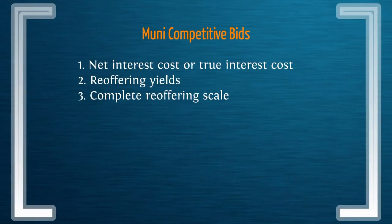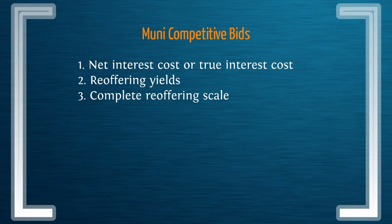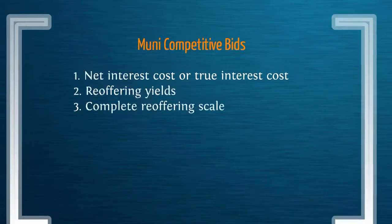For Muni competitive bids, what should be disclosed regarding interest costs when the issuance is being made includes the net interest cost or the real interest cost of the Muni, any re-offering yields that the underwriter will offer, and a complete re-offering scale by the underwriter or syndicate bringing the issue to market.